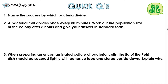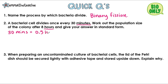Now it's time for some quick questions. Pause the video, give them a go, and then press play when you're ready to go over the answers. Number 1: name the process by which bacteria divide. It's binary fission. Number 2: a bacterial cell divides once every 30 minutes. Work out the population size of the colony after 8 hours and give your answer in standard form — that's for higher tier only, so just do that if you can.